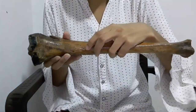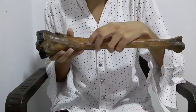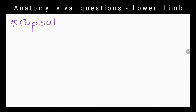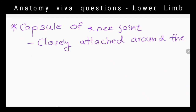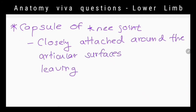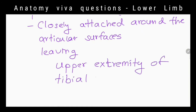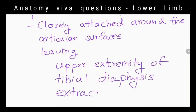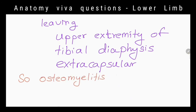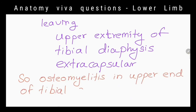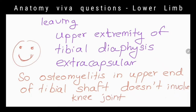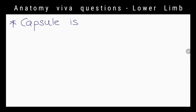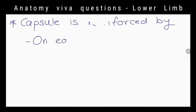The upper end of the tibia shaft is one of the common sites for acute osteomyelitis. But why does it usually not involve the knee joint? Because the capsule of the knee joint is closely attached around the articular surfaces, leaving the upper extremity of the tibial diaphysis extracapsular.